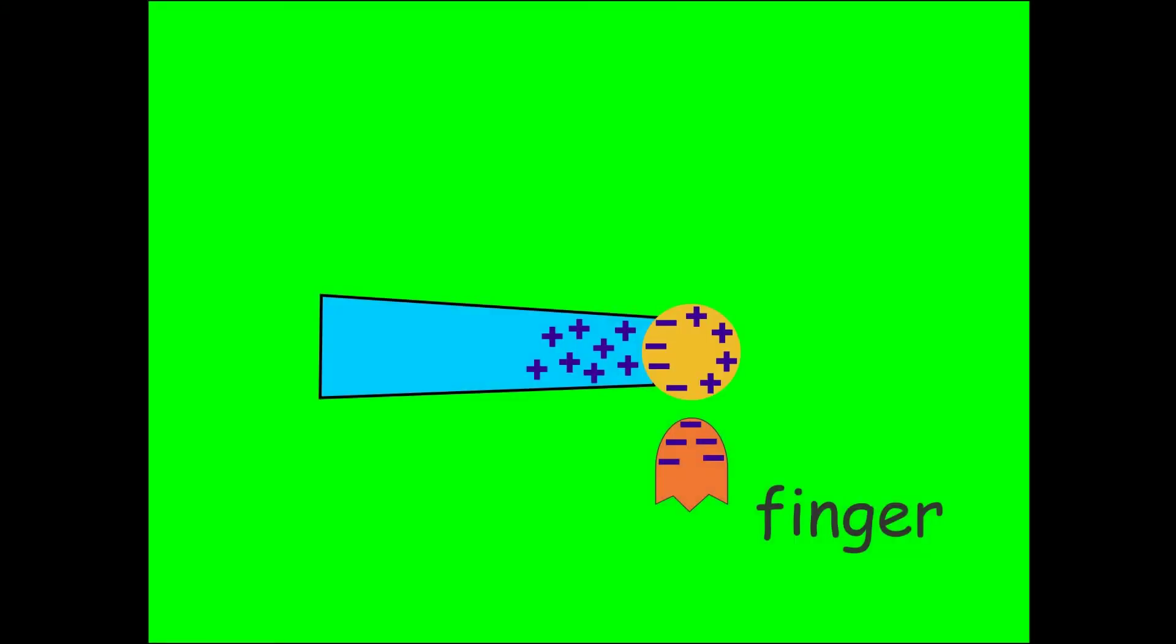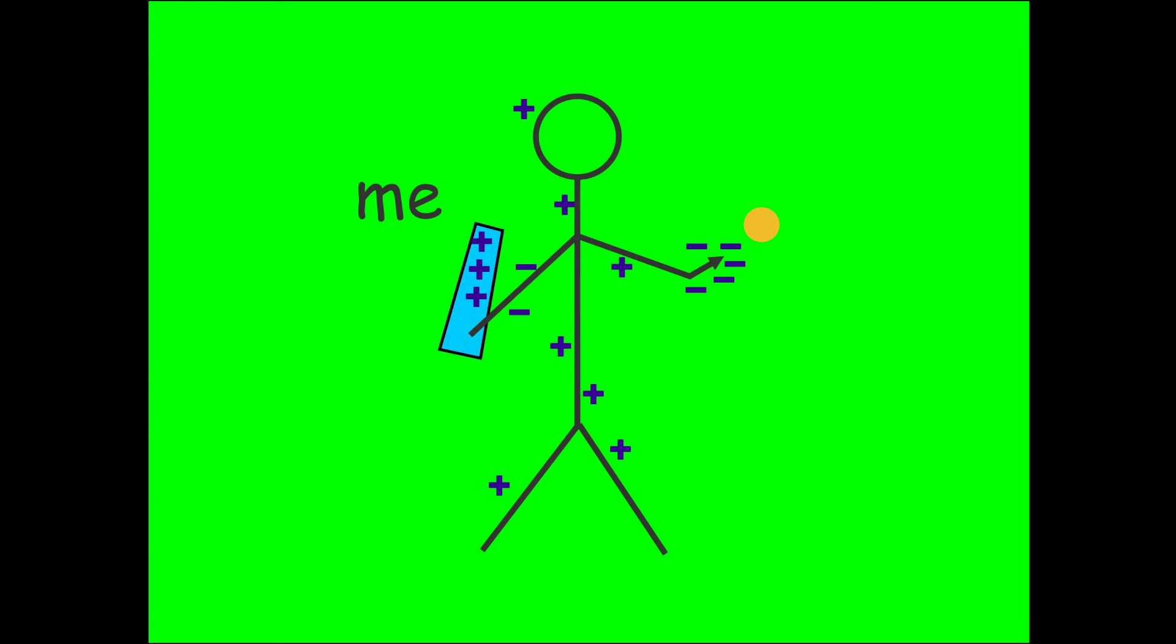The plexiglass pulls electrons onto my finger when I bring it nearby. A positive charge of similar magnitude will also appear on the skin of the rest of my body. The plexiglass will also induce a negative charge on my left hand due to its proximity.